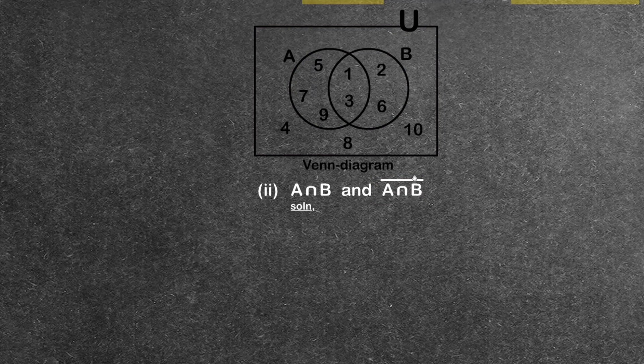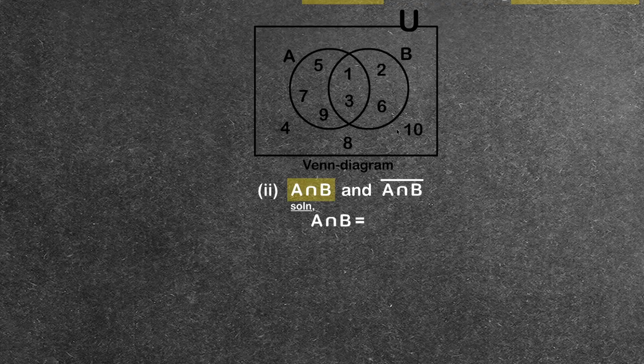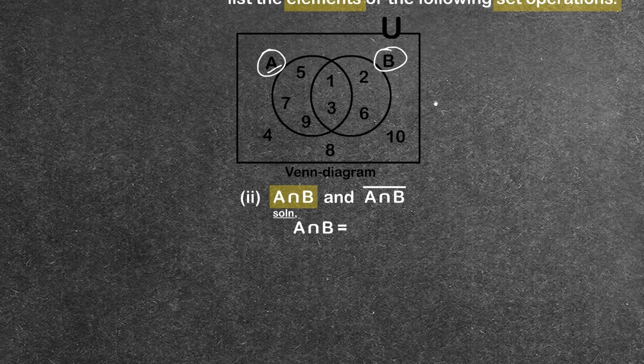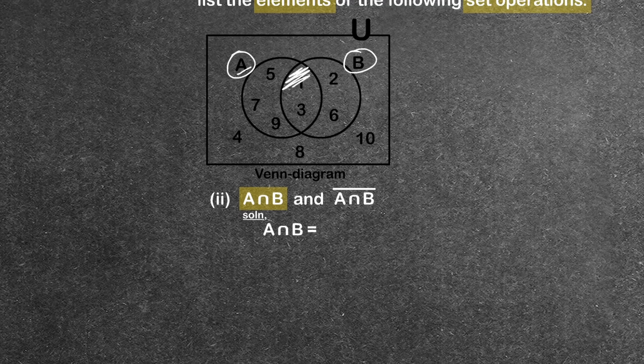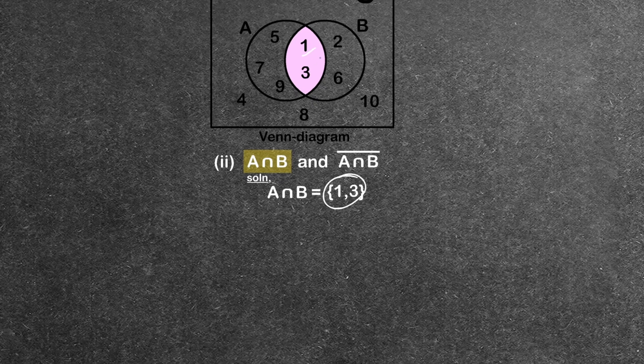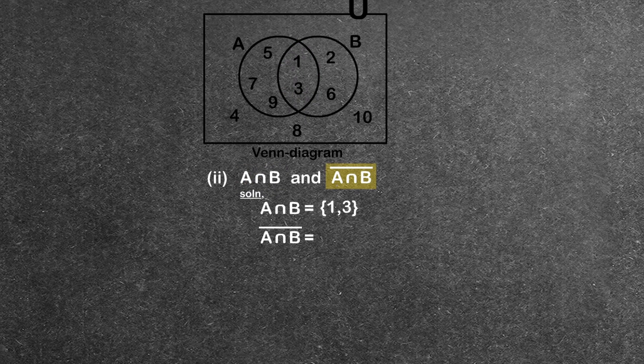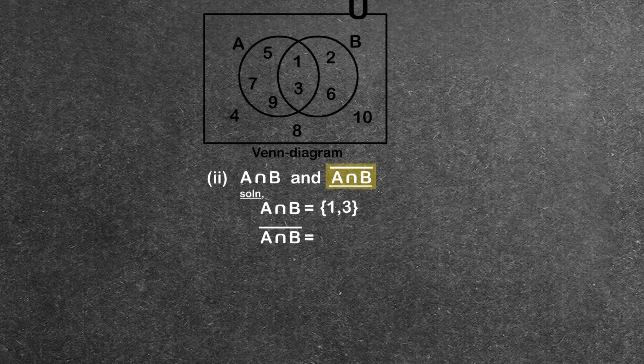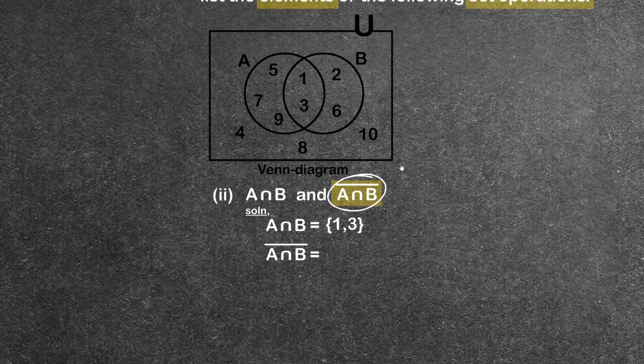Now for part (ii), A∩B (A intersection B). A intersection B means the common elements between A and B, the elements that appear in both sets. Looking at the diagram, the common elements are 1 and 3.